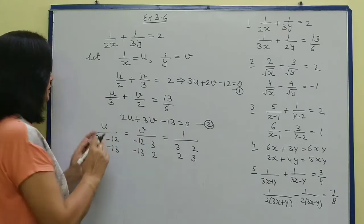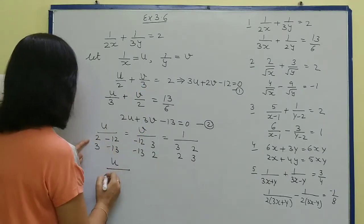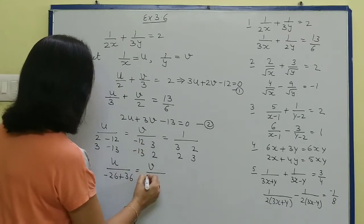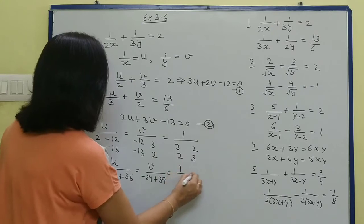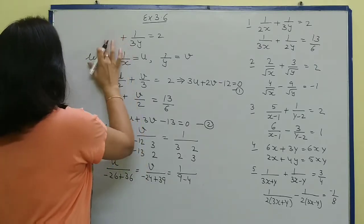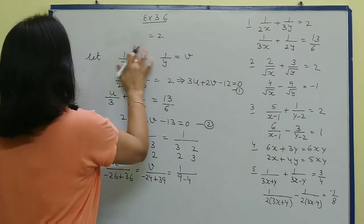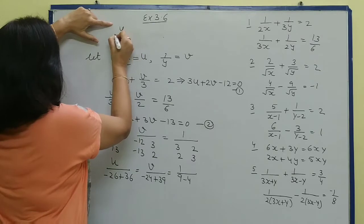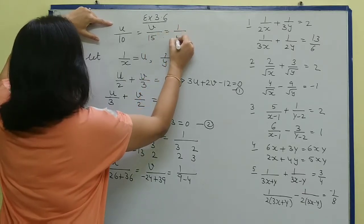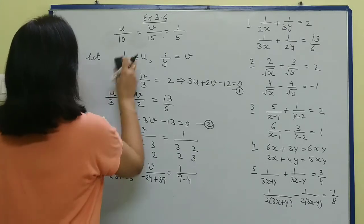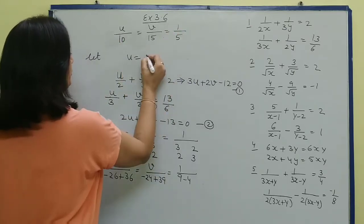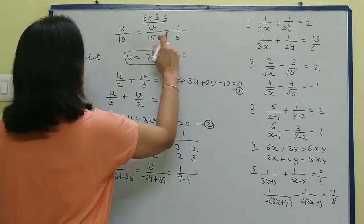Now solving: u upon = (-26) - (-36) = 10. For v: 12×2 = 24 and 13×3 = 39, giving v upon = -24 - (-39) = 15. And 1 upon = 9 - 4 = 5. From here we find u and v: u = 10 upon 5 = 2, and v = 15 upon 5 = 3.